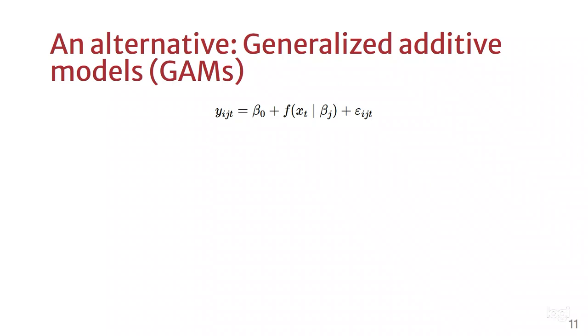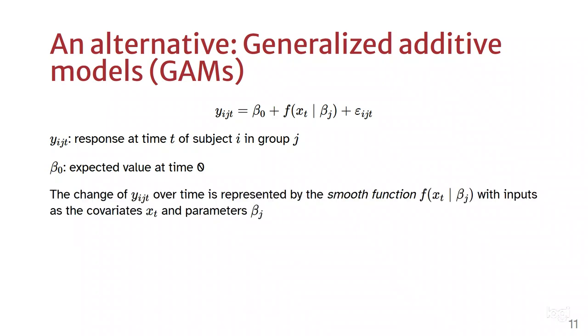The construction is going to have a response we're trying to explain using an intercept. But now, instead of using lines, we're going to use something called a smooth function. That allows you to follow the trend of data, and we're also going to have an error term.